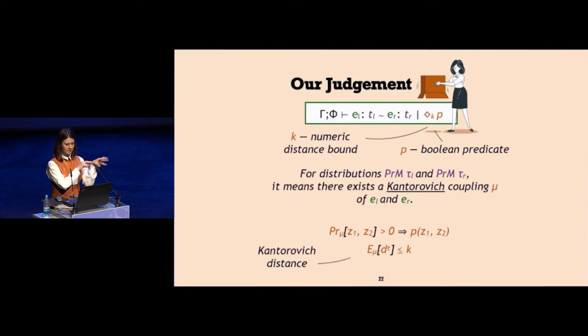There can be in general case more than one solution to the system of equations, and we put additional constraints on the requirement for coupling. First of them is that every pair in the coupling, the samples of the pairs which are now primitives, they should satisfy the predicate if they have non-zero probability in mu. The second requirement is that expectation of distance, which is again on samples from mu which are primitives, expectation of this distance should be less or equal to k.